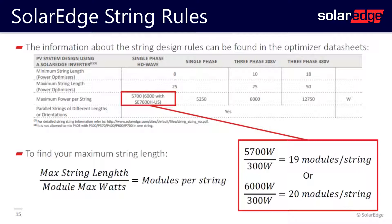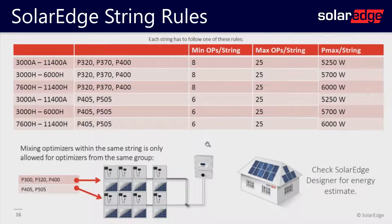The 7.6 kilowatt and above has a maximum string length of 6,000 watts. To find your maximum string length, take your maximum power per string — 6,000 watts — and divide by your module wattage. In this example we use 300 watts. On a 6 kilowatt inverter that means 19 modules per string; on a 7.6 kilowatt inverter you can put 20 modules on a single string.